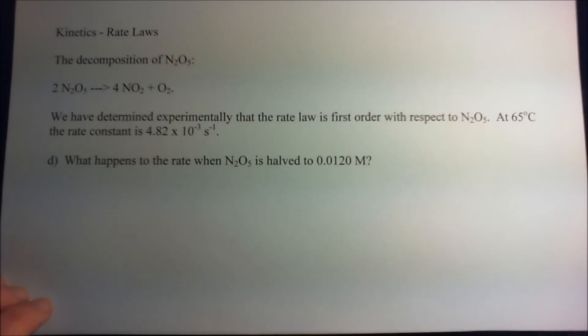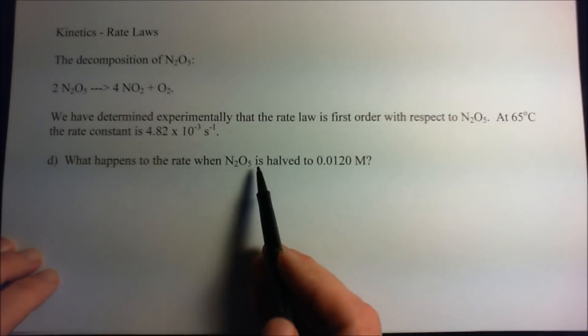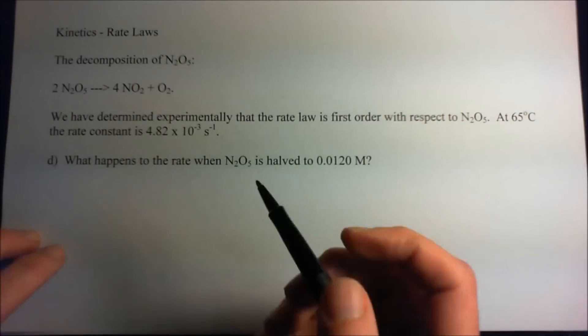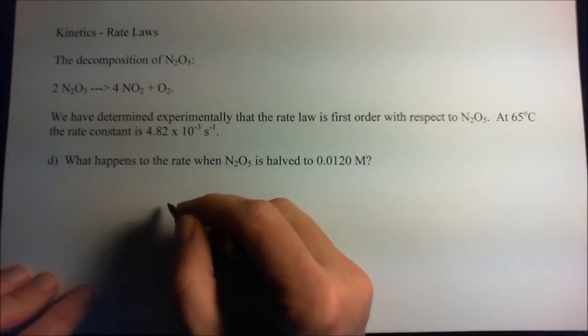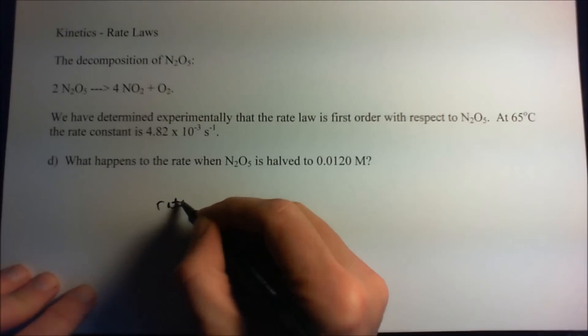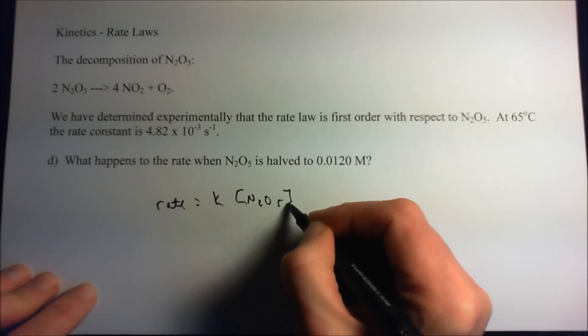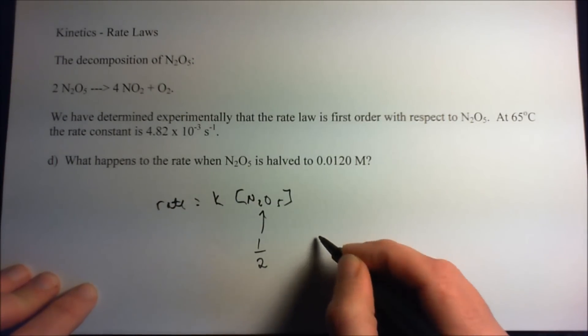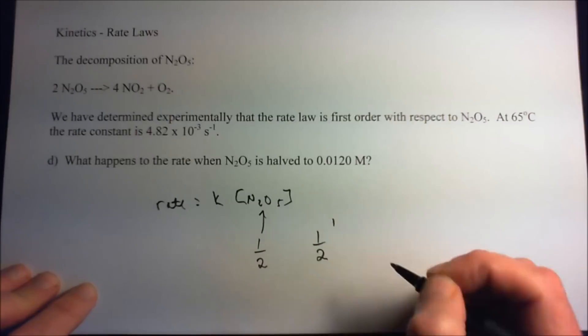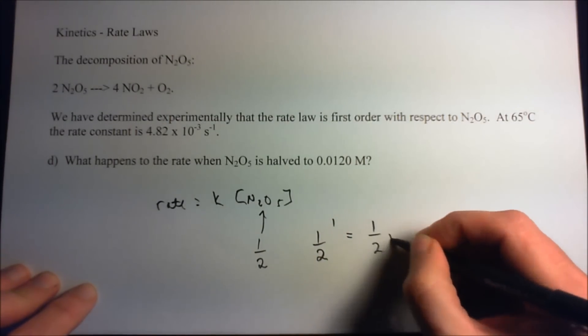Similarly, for part D we were asked, well what happens if we halve the concentration? Well that is half of the original concentration, but we just need to realize that the rate is the rate constant times the concentration of N2O5. And so if we were to halve that, well that would be 1 half to the 1, and that means that it would be 1 half the rate.